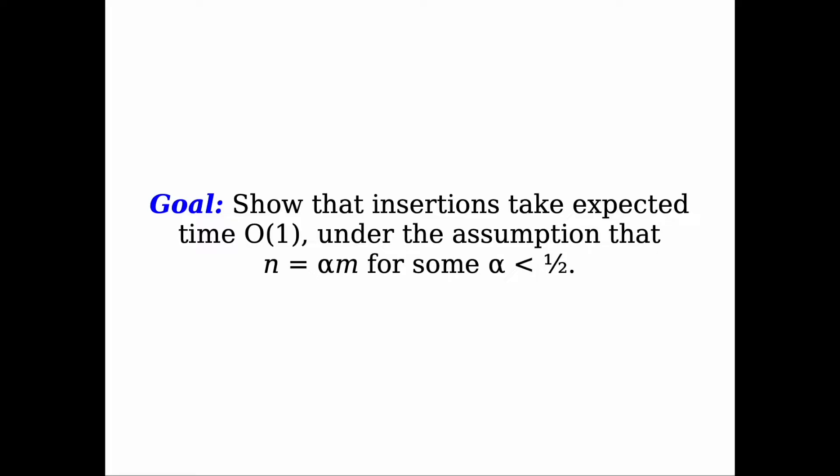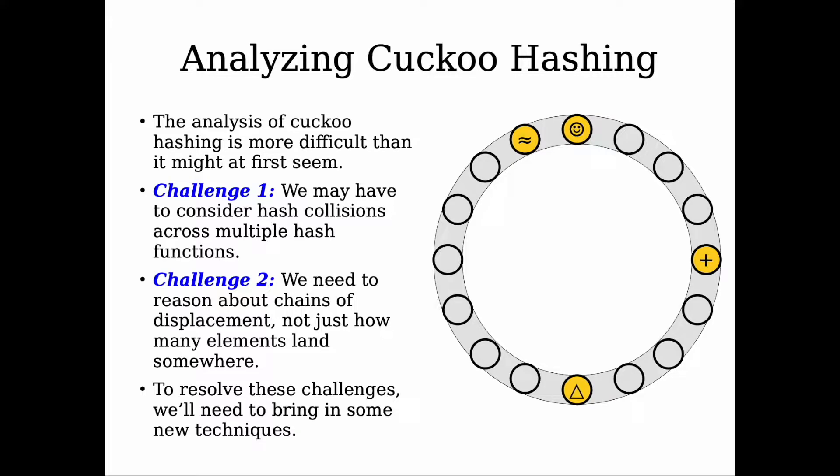This is under the assumption that the load factor, n equals alpha m for some alpha less than one-half. Analysis of this data structure is more difficult compared to our basic data structures shown in the previous lectures because we have these two challenges. The first one is we need to consider hash collisions across multiple hash functions, and the second challenge is that we need to consider the chains of displacements, not just how many elements land somewhere.